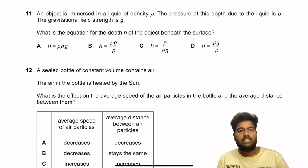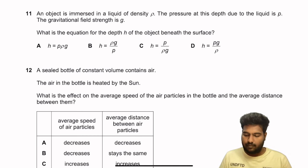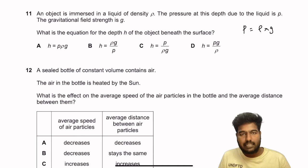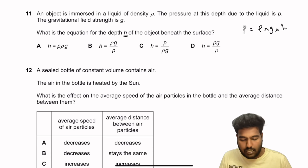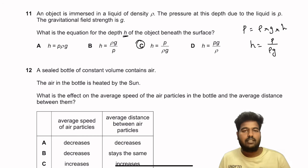Question 11: An object is immersed in a liquid of density ρ. The pressure at depth h due to the liquid is P, and gravitational field strength is g. The formula is P = ρgh. Rearranging for h gives h = P ÷ (ρg). So option C is the right answer.